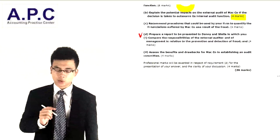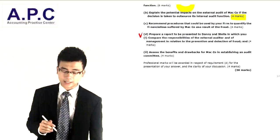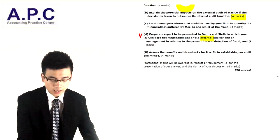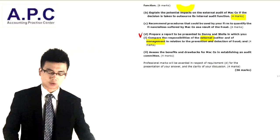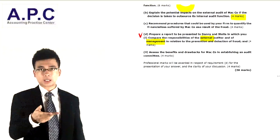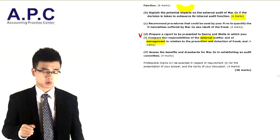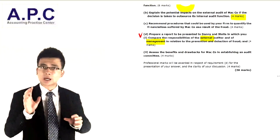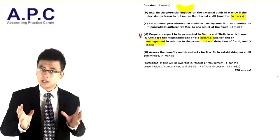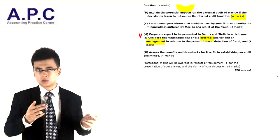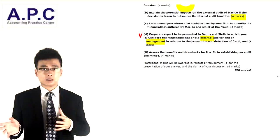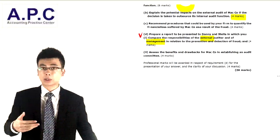Part D: prepare a report presented to Danny and Stella comparing, firstly, the responsibilities of the external auditor and management in relation to prevention and detection of fraud. From the external auditor's perspective, their aim is to express their audit opinion, not to detect and prevent fraud. For management, their primary responsibility is to set up sound internal controls to prevent and detect fraud. If fraud leads to a material misstatement, the external auditor will need to quantify those amounts and require management to correct it.